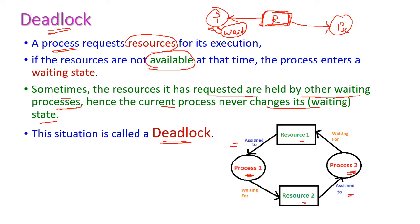Now, process 1 is waiting for resource 2, but resource 2 is already assigned to process 2. And for process 2, it is waiting for resource 1, but resource 1 is already assigned to process 1. So this is the hold and wait state — this is called deadlock.